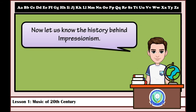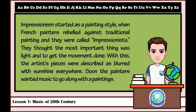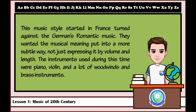Let us know the history behind Impressionism. Impressionism started as a painting style when French painters rebelled against traditional painting and they were called Impressionists. They thought the most important thing was light and to capture movement. The artistic pieces were described as blurred with sunshine everywhere. Soon, the painters wanted music to go along with the paintings. This music style started in France and turned against German Romantic music. They wanted musical meaning expressed in a more subtle way, not just by volume and length. The instruments used were piano, violin, and a lot of woodwinds and brass instruments.